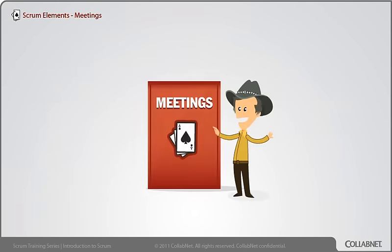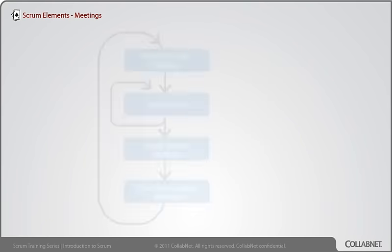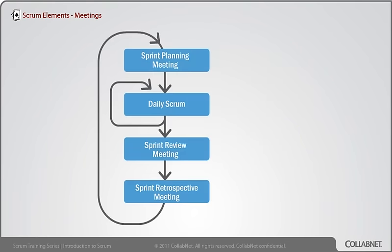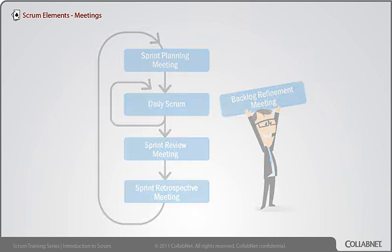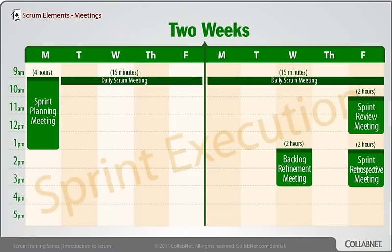Now let's have an overview of the meetings in Scrum. There are four meetings defined by Scrum and a fifth one that just about everyone has found useful. The four defined meetings are: the Sprint Planning Meeting, the Daily Scrum, the Sprint Review Meeting, and the Sprint Retrospective Meeting. The fifth one has no official name, so we'll call it the Backlog Refinement Meeting. Here's an example of how those meetings might fit into a two-week sprint.